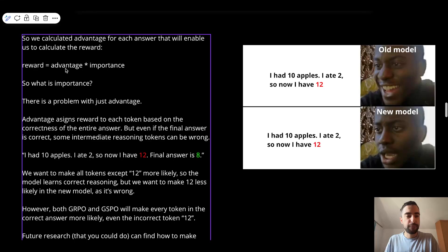So we have the advantage for the correct and incorrect answers. But to calculate the reward, we also have this importance or importance ratio. But there is a problem with advantage. It assigns reward based on the correctness of the final answer. But there could be reasoning mistakes within the reasoning process, within the answer. And then even those reasoning mistakes will get assigned rewards, for example, if the final answer is correct, which is not good. For example, I had 10 apples. I ate 2. So now I have 12. Final answer is 8.